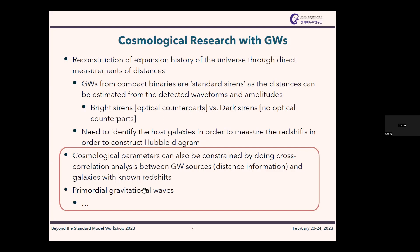Cosmological parameters can also be constrained by doing cross-correlation analysis between gravitational wave sources and galaxies with known redshift. There are also primordial gravitational waves: some inflation theories predict gravitational waves from the early universe. We don't usually measure these directly — we only infer them through the CMB — but a direct measurement would be very important. This is called primordial gravitational waves, and it is extremely difficult to observe.